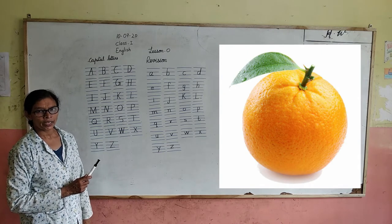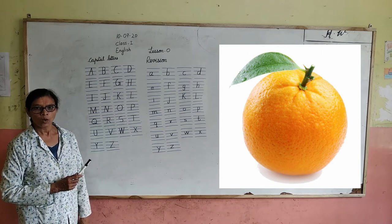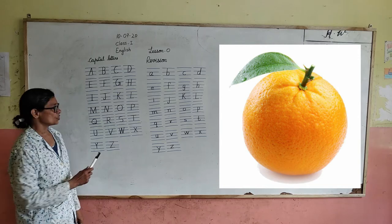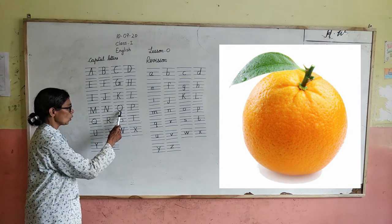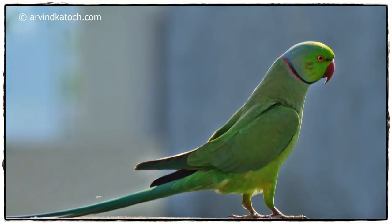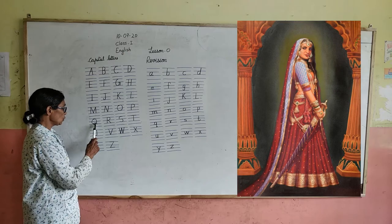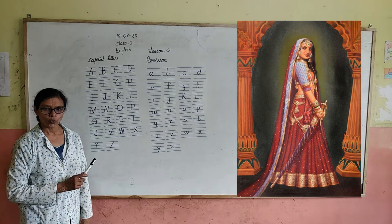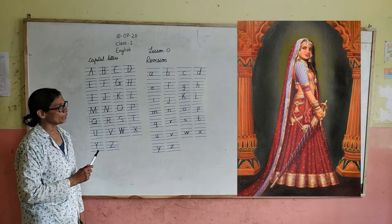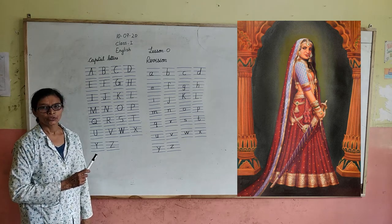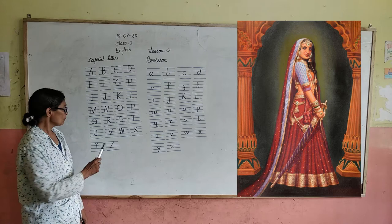O for orange — O-R-A-N-G-E, orange. P for parrot — P-A-R-R-O-T, parrot. Q for queen — Q-U-E-E-N, queen.